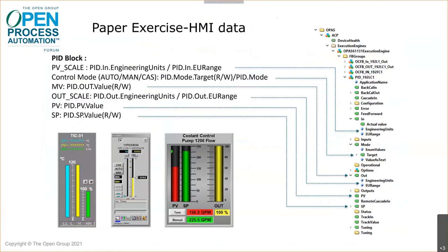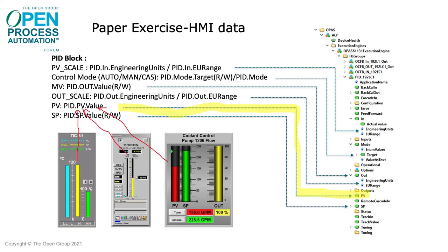HMI graphics can be linked to the OPC UA information model. Note that HMI is not standardized, so the presentation can be vendor-specific, but the layout of the data on the network is standardized, and the HMI or any other application can access it, subject to security authorization. Here you can see the mapping of one of the graphic objects for the PV, and where that comes out of the OPC information model on the right.